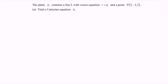Hello everyone. In this video I'm going to discuss the example for vectors. Kindly refer to the questions. The plane named pi sub 1 contains the line with the vector equation r equals tj and a point P with coordinates (3, -1, 2). Find the Cartesian equation of the plane pi 1.